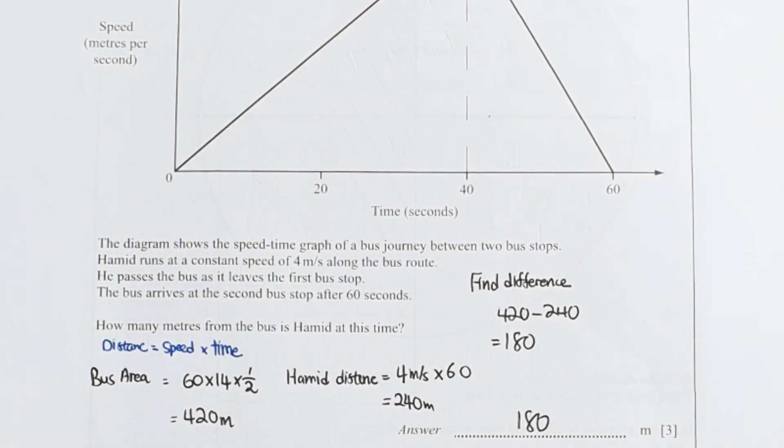For question 15, distance equals speed times time. So the bus area equals the shape. The base of it is 60 times the height is 40, then times half because it is a triangle. Whereas for Hamid's distance, traveling at 4 meters per second, after 60 seconds it is 240 meters only. Hence the difference is 180.